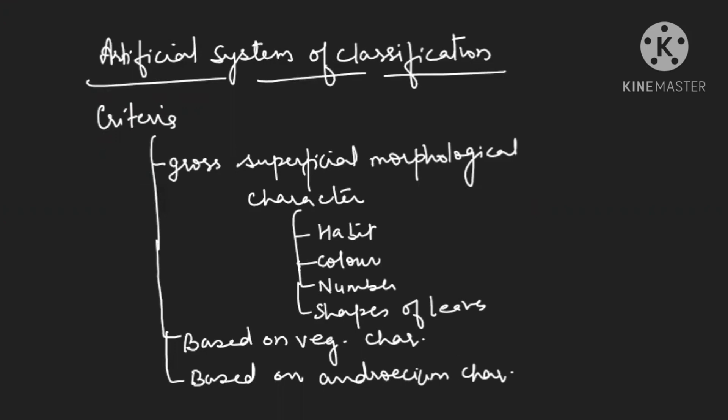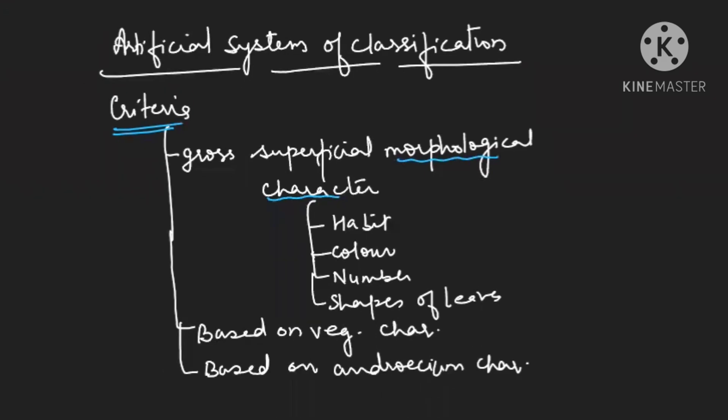We are going to start with the system of classification. The artificial system of classification was based on few criteria — superficial morphological characters like habitat (where they are found), whether they are herbs, shrubs or trees, what habit they have, what type of color, and the number and shapes of leaves. Basically, it was based on only vegetative characters.